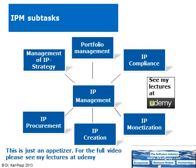As you can see, there are six sub-tasks of IP management. First, the management of the IP strategy itself, meaning creating and updating the IP strategy over time. Second, portfolio management, which looks at all the intellectual property assets, manages them, gets new ones, and divests old ones in the portfolio. Third, IP compliance, which is a task where we make sure that we comply with the rules set for intellectual property handling in a company.